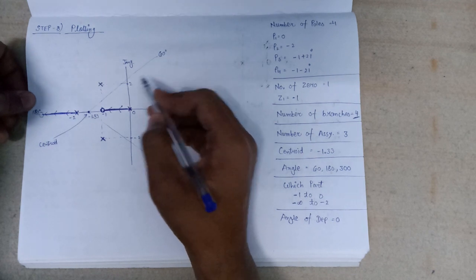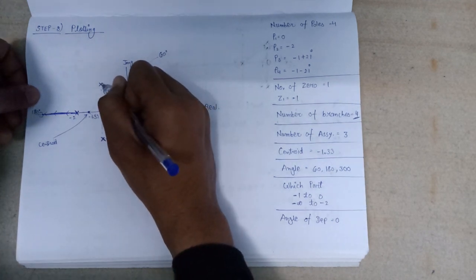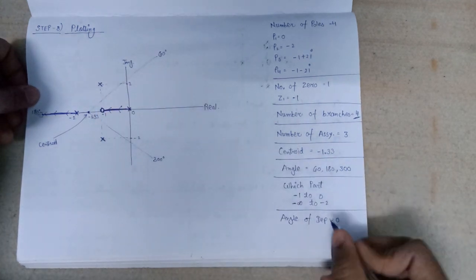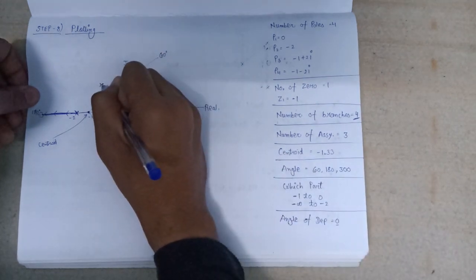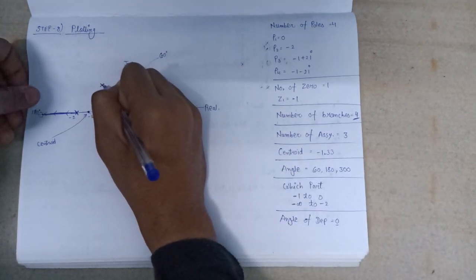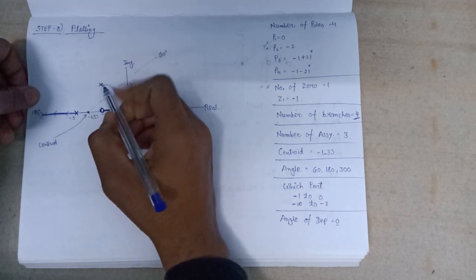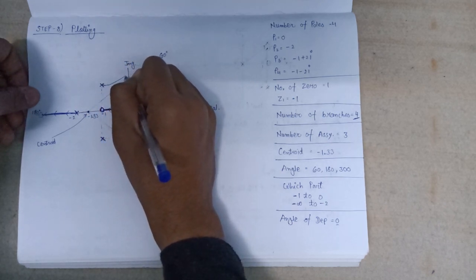Following an angle of 60 degrees, since the angle of departure is equal to 0, that's why this branch of the root locus emerges from this pole and following the path of the 60 degree it will go to the imaginary zero.